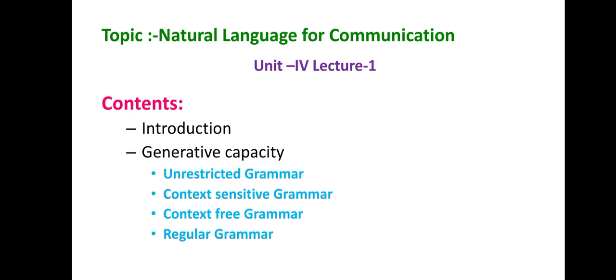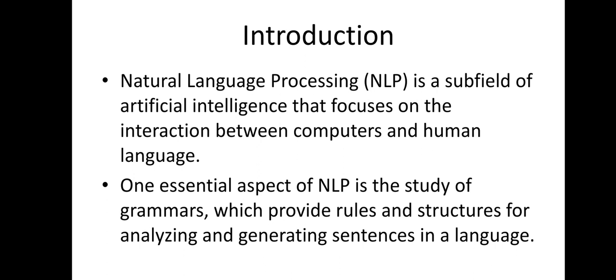Natural language processing is a sub-field of artificial intelligence that focuses on the interaction between computers and human language. In an AI system, instead of a computer we consider an agent - which may be software, a robot, or any system - that interacts with humans. In NLP, we study grammars and how sentences are constructed.